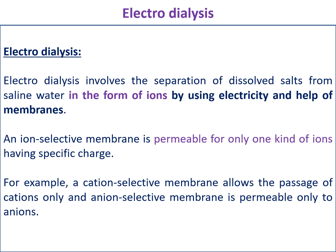What is an ion selective membrane? An ion selective membrane is permeable to only one kind of ion, having a specific charge. There are two types of ion selective membranes: the anion selective membrane and the cation selective membrane. The anion selective membrane only allows the passage of anions, and the cation selective membrane only allows the passage of cations.